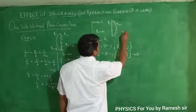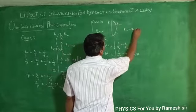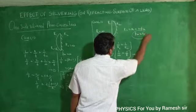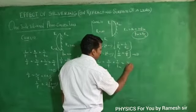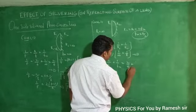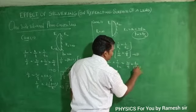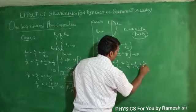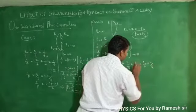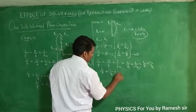Here fm is for the silvered convex mirror. Since the radius of curvature is r, we get fm = r/2. So 1/F = 2/f + 1/fm becomes 2/f + 2/r.